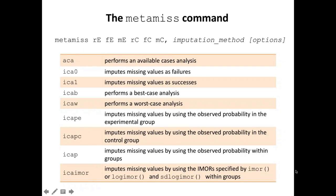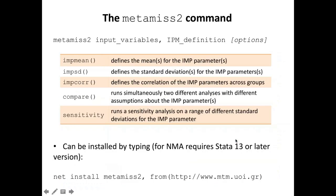As Dimitris said, there was a command programmed by Ian White and Julia Higgins called Metamuse, which had some options that do not exist in the new command. There were some options about imputation methods, but as Dimitris said, it is important to account for the uncertainty of the assumptions we make about missing data, and that's why those options have not been implemented in the new command.